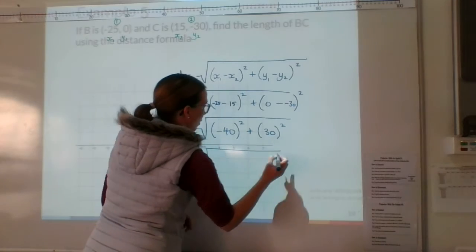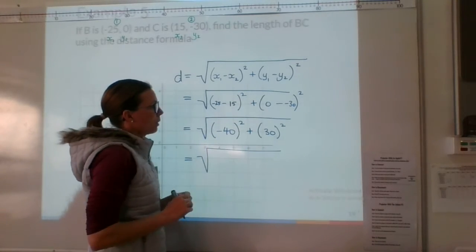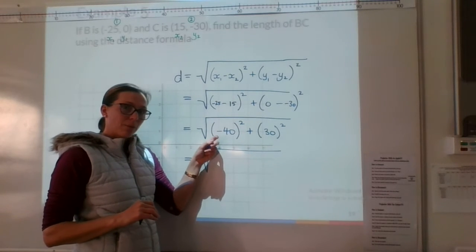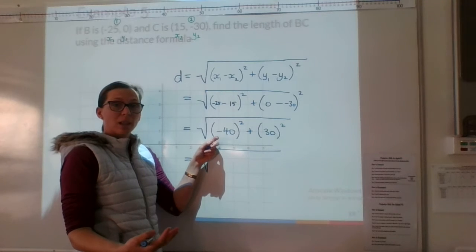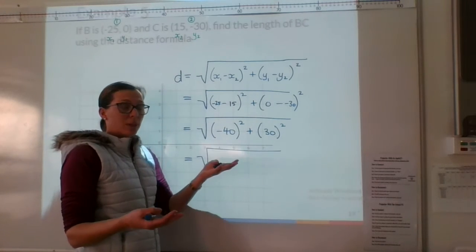Okay. So we can use our calculator or we can do it in our heads. Negative 40 squared. So we're saying negative 40 times negative 40. Okay? So 4 times 4 is 16. We know it's going to be positive because a negative times a negative is positive.